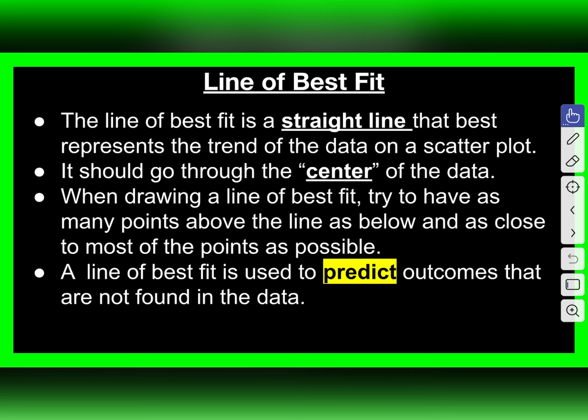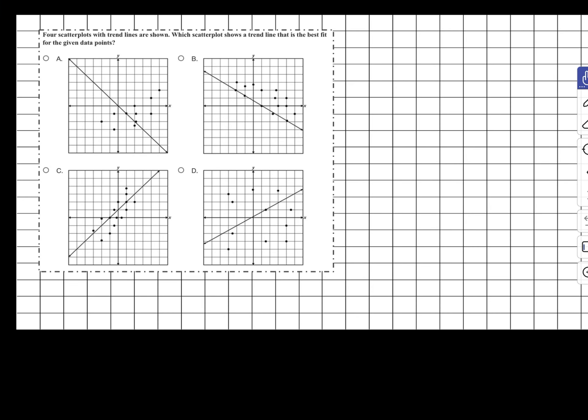As we move forward, we're going to look at a couple of examples. In this first example, it says there are four scatter plots with trend lines shown, and it asks which scatter plot shows the trend that is the best fit for the given data. When we look at examples like this, we're looking to see which one fits the data the best — meaning a straight line that goes through the center and is somewhat even above and below.